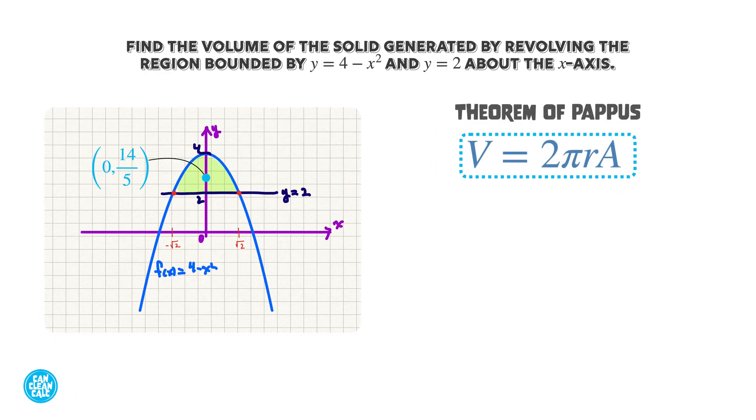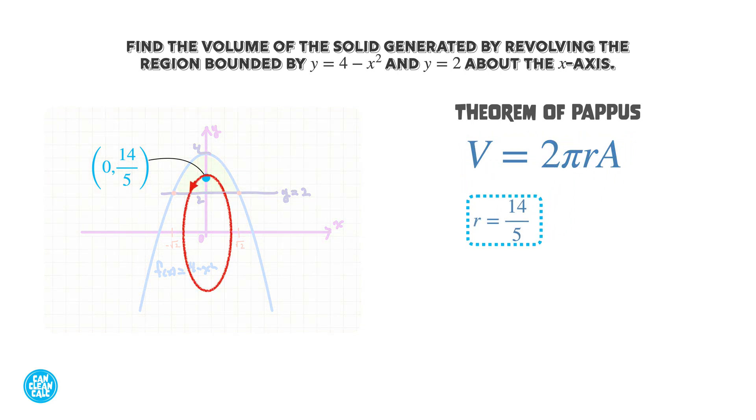We're going to apply the theorem of Pappus. Given that we know the coordinates of the centroid, since we want to revolve about the x-axis, we look at the y-coordinate of the centroid and let that provide the radius to the axis of rotation. In other words, r = ȳ = 14/5.